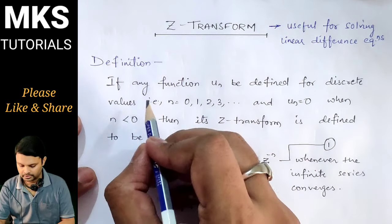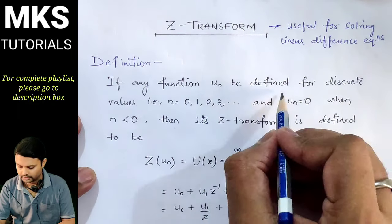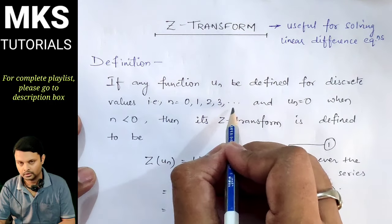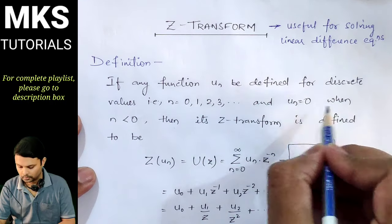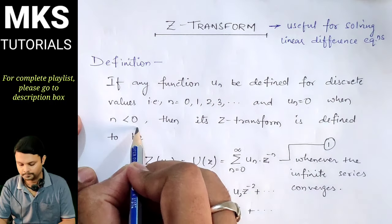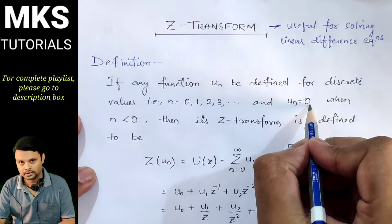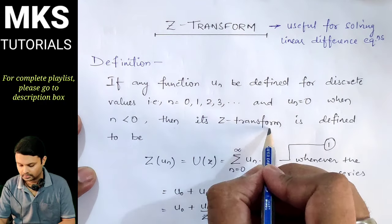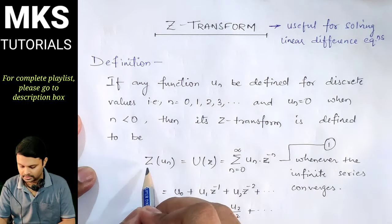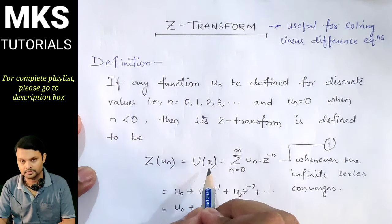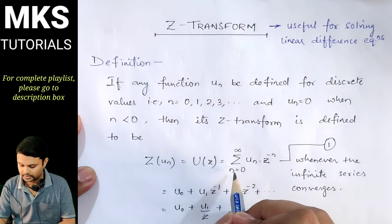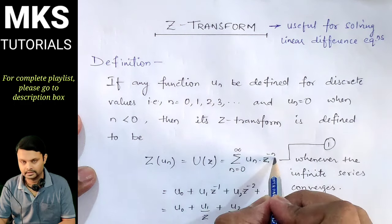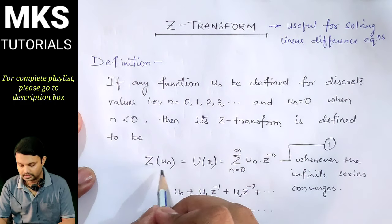Now, coming to the definition part. If any function u(n) is defined for discrete values, i.e. n equals 0, 1, 2, 3, and u(n) equals 0 when n is less than 0, then its Z-transform is defined as: Z-transform of u(n) is equal to U(z), and that equals summation n equal to 0 to infinity of u(n) into z to the power minus n.